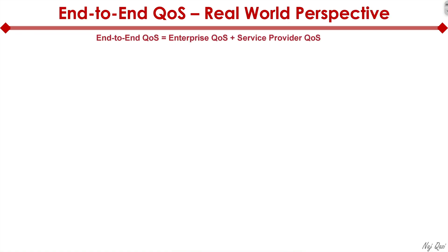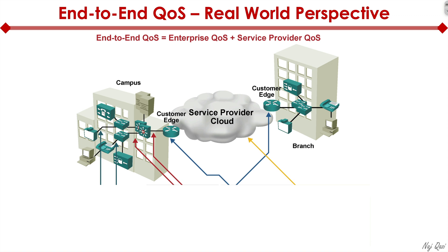The final topic is the end-to-end QoS view from a real-world perspective. End-to-end QoS means we have enterprise QoS — our local area network — and service provider QoS — our wide area network or WAN. Combined, that is end-to-end QoS. In this example, to the left we have a campus, to the right a branch, and for them to communicate we have the service provider cloud in the middle.